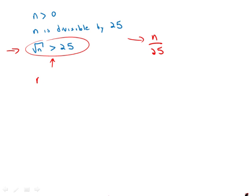So we square it and we get n is greater than, and I'm just going to write it as 25 times 25.